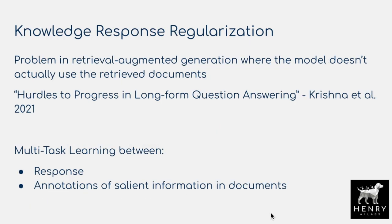A key problem with context-augmented models is well documented in "Hurdles to Progress in Long-Form Question Answering": models like REALM from Google or retrieval augmented generation from Facebook AI often don't actually use the retrieved documents — they generate the same answer as if the retrieved document wasn't even in the input. This is also similar to natural language inference problems where a model produces the same classification for a hypothesis regardless of the premise, due to overfitting on these kinds of datasets.